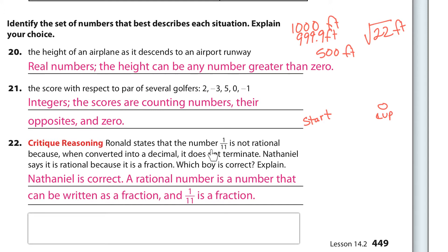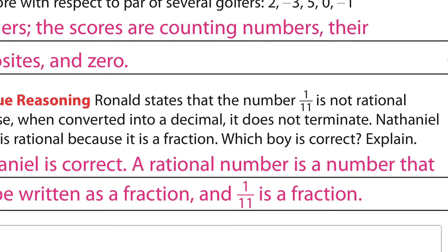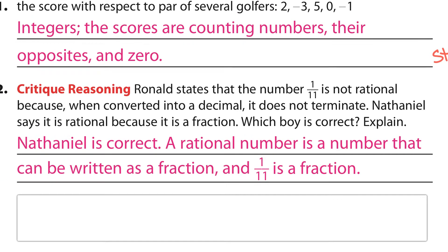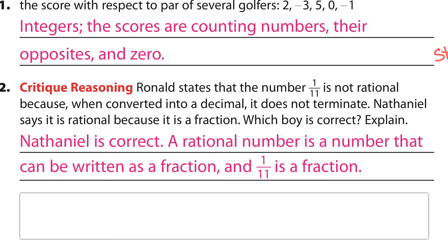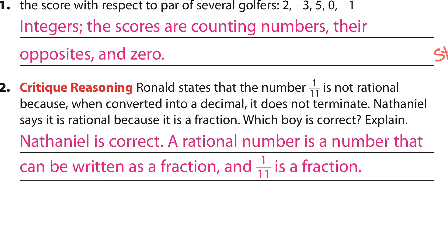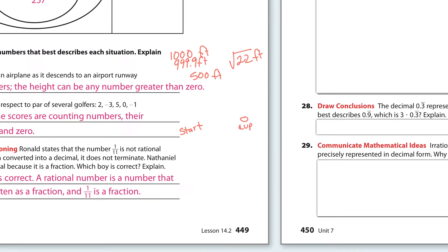Ronald states that the number 1/11 is not rational because when converted to a decimal it does not terminate. Nathaniel says it's rational because it's a fraction. Well, it has to be — it's a fraction of integers. A rational number is a fraction of integers, and as a byproduct those fractions of integers end up being either a terminating or a repeating decimal. So it's definitely a rational number — done deal.